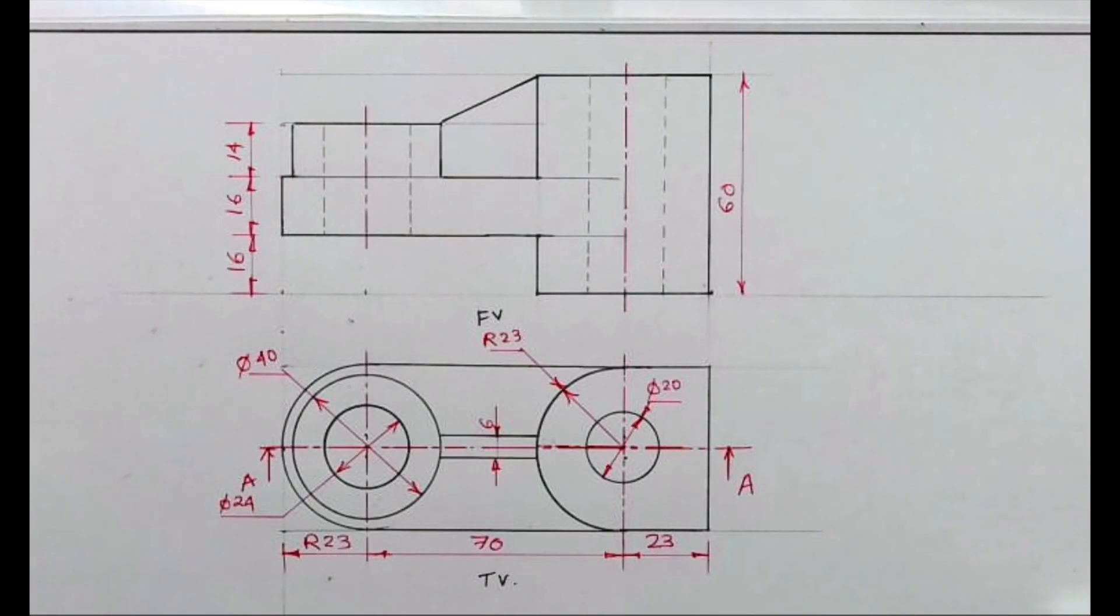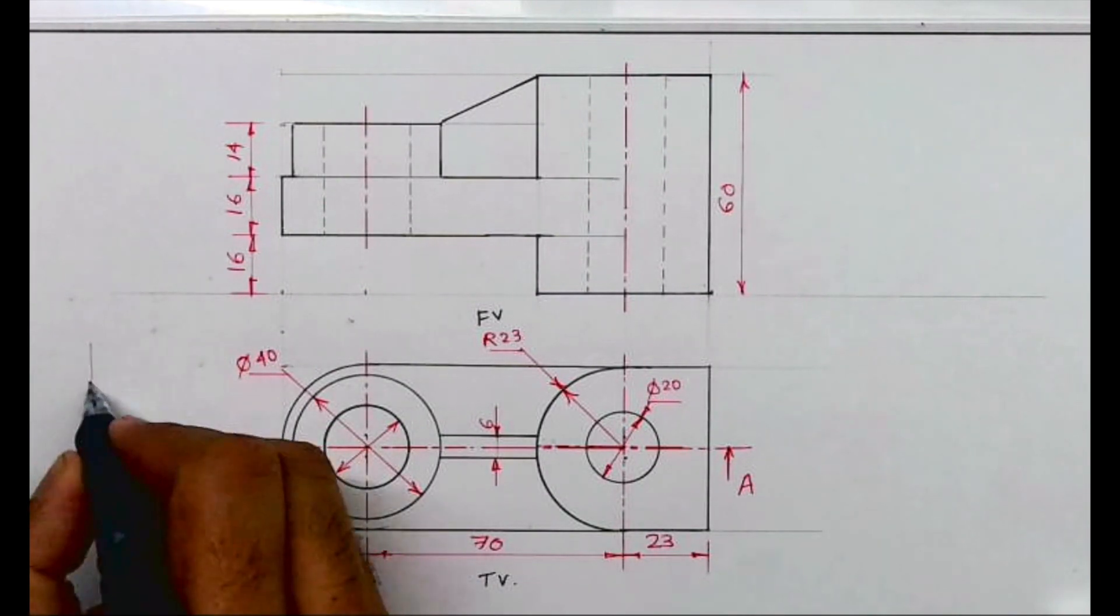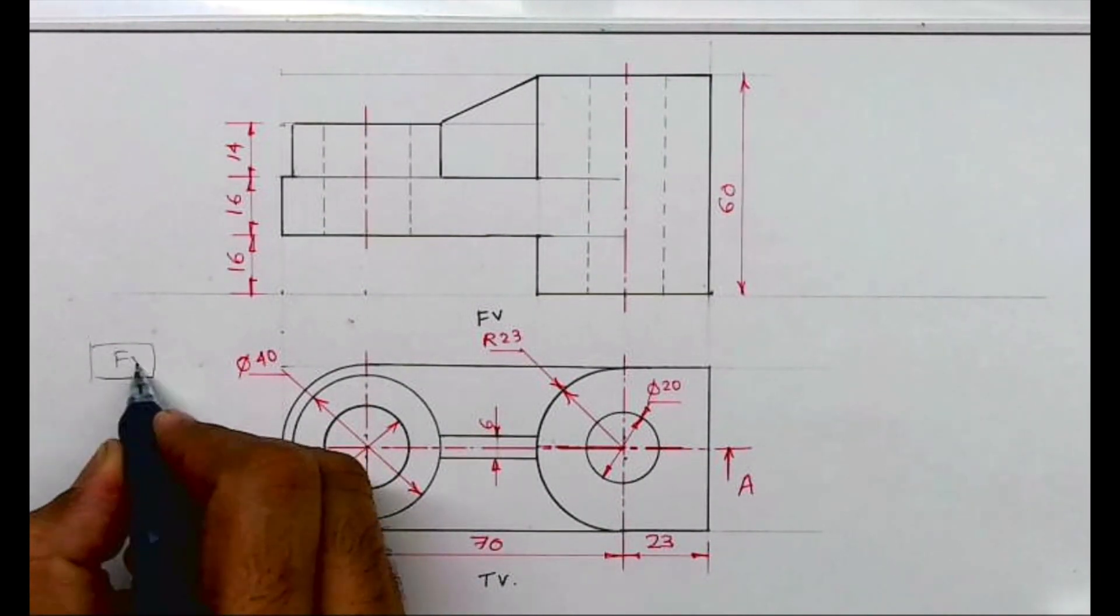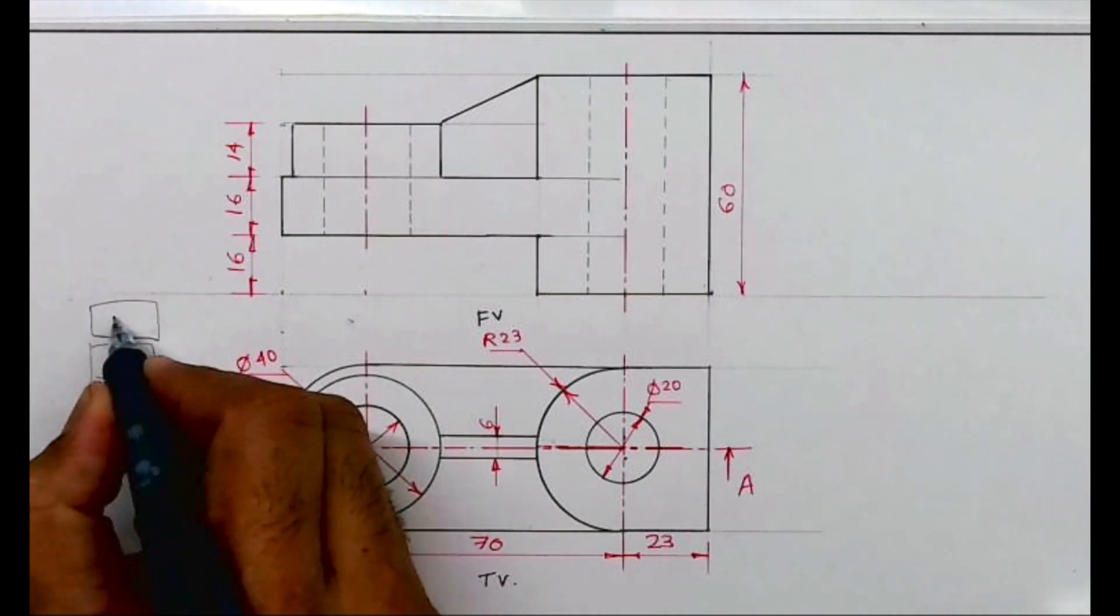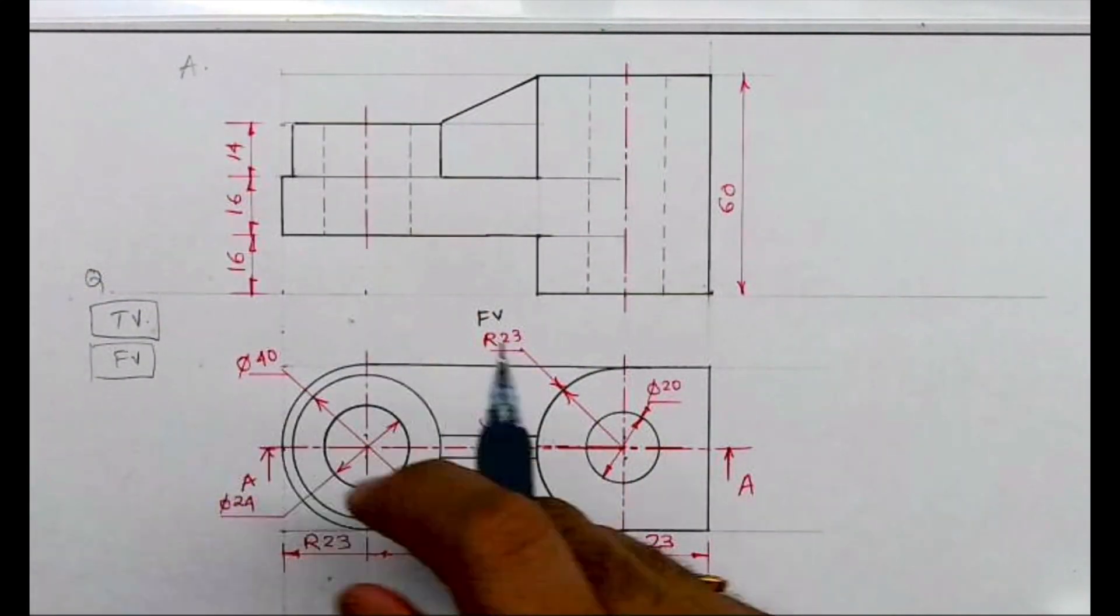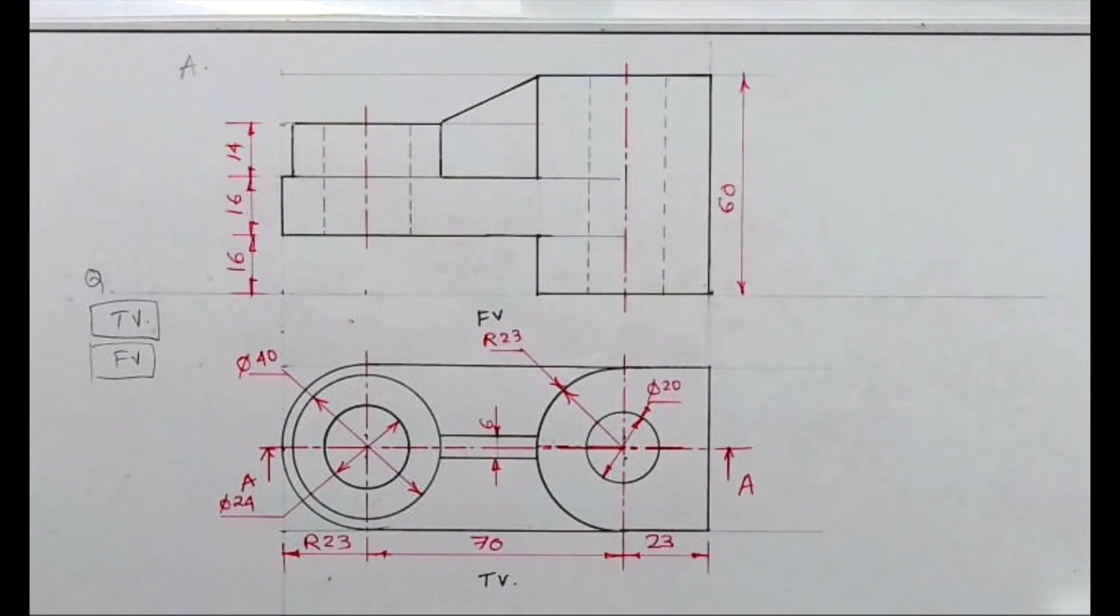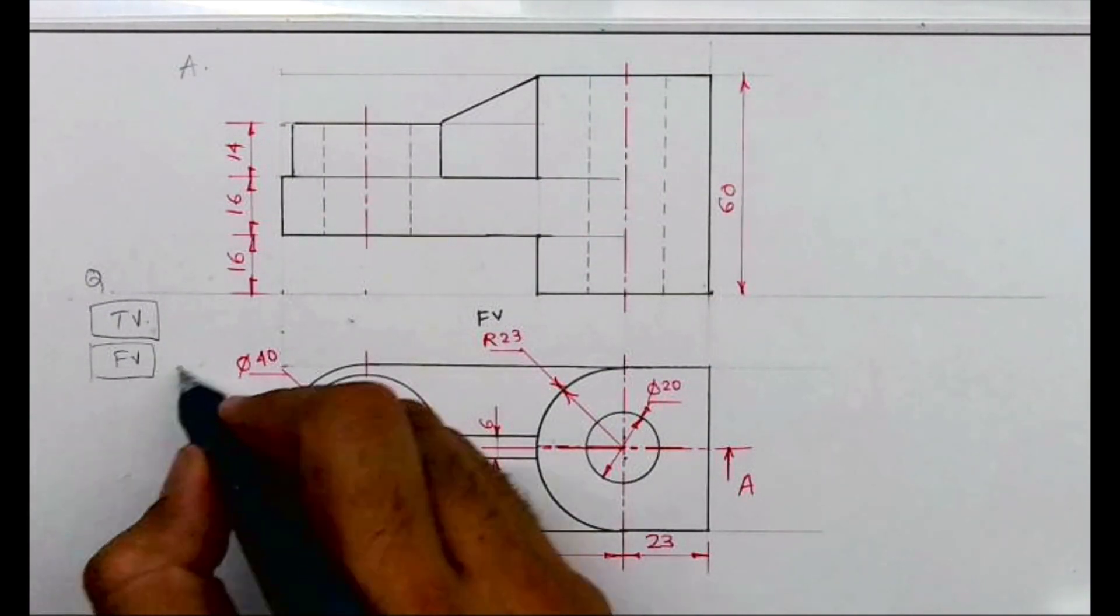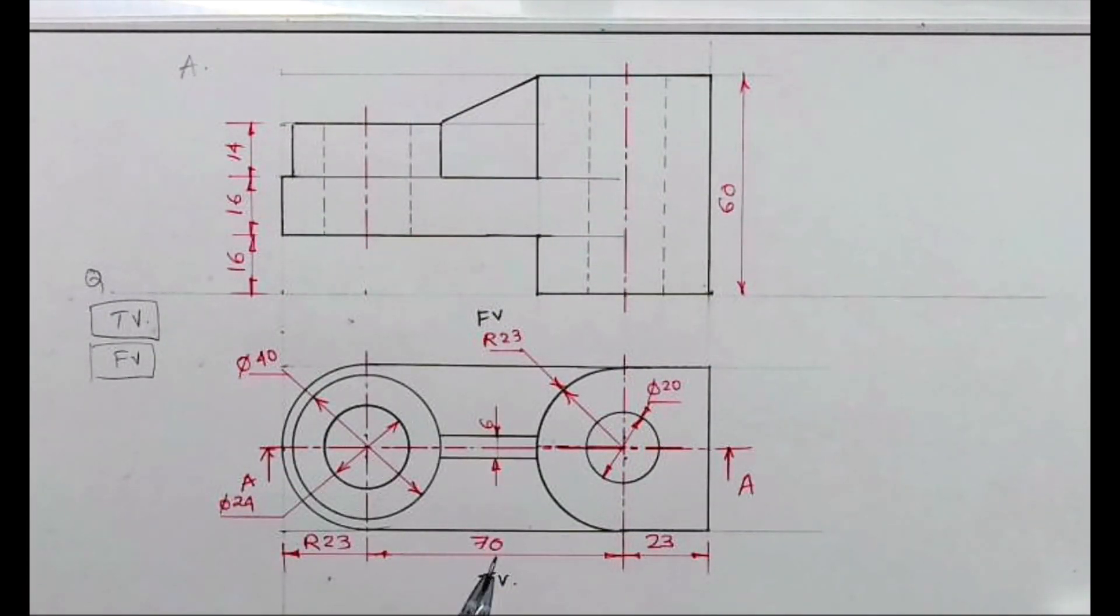Welcome to technical drawing. Today we'll see this problem. What we need to do is a sectional front view. In the exam, they've given you front view and top view like this in third angle. So what we need to do is draw it in first angle. They have asked us to draw it in first angle, and then we need to draw sectional front view. So we'll draw front view up, top view down right.